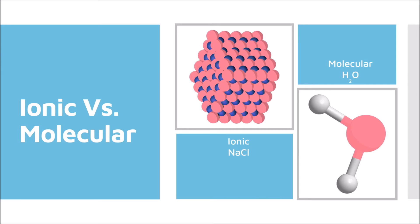Contrast that with a molecular compound. Here you have water, which is a typical molecular compound. Water is made up of molecules, and each molecule contains exactly one oxygen and two hydrogen atoms. For a molecular compound, the chemical formula gives you the actual number of atoms present, and the molecule is an individual discrete unit. Whereas with an ionic compound, it's not a molecule — it is a series of positively and negatively charged ions, and the formula gives you the ratio of the charges present.